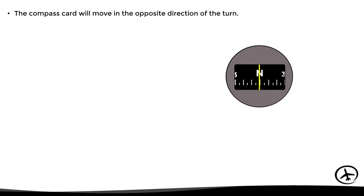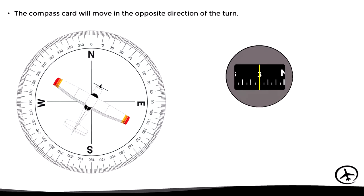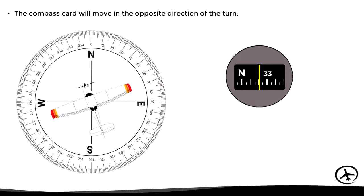Here the aircraft is heading north. If it executes a right turn, for example to heading 030, the compass card will show an apparent turn to the left. We can see this effect again if we continue to turn right to heading 050. And if the aircraft turns left, the compass will show an apparent turn to the right.